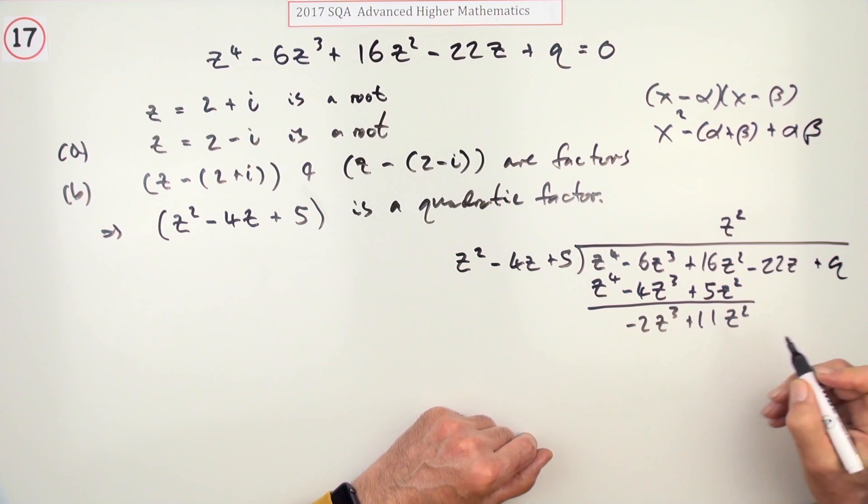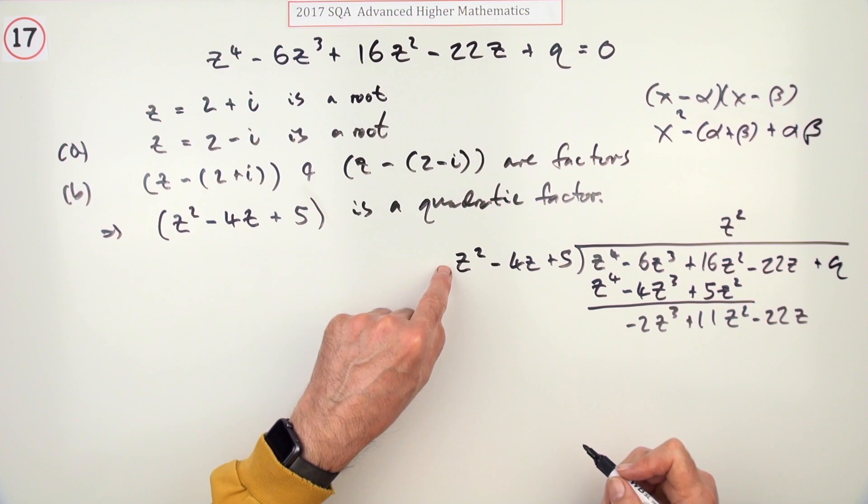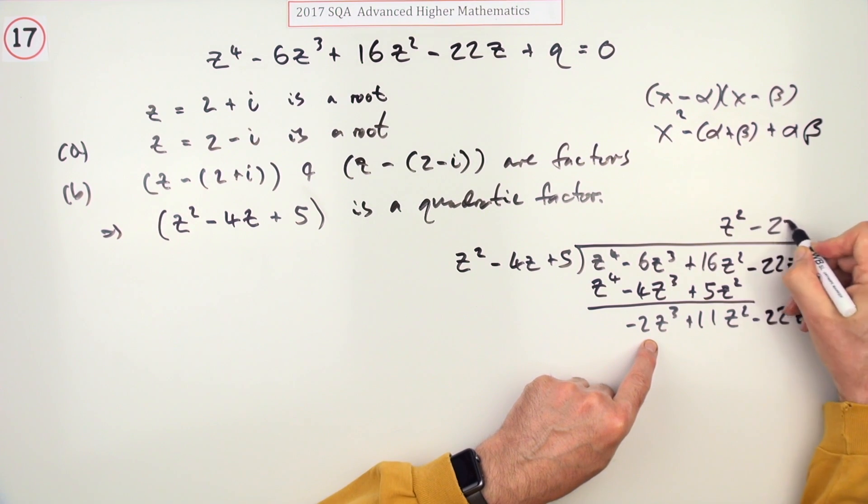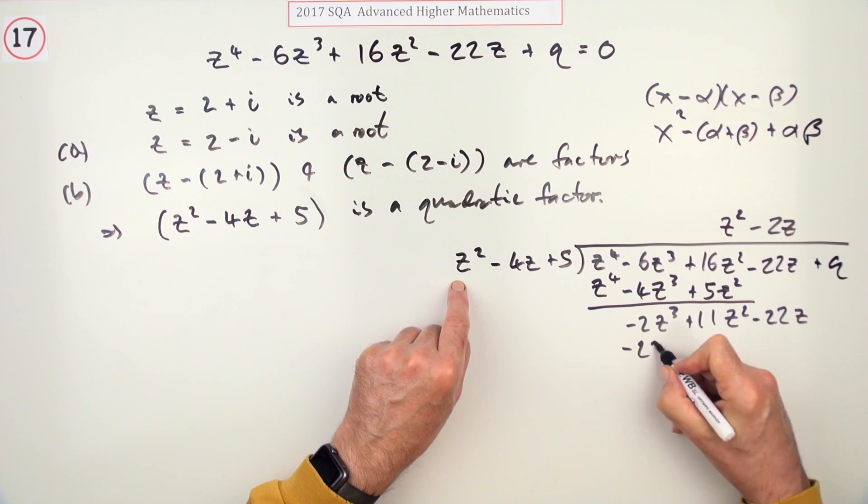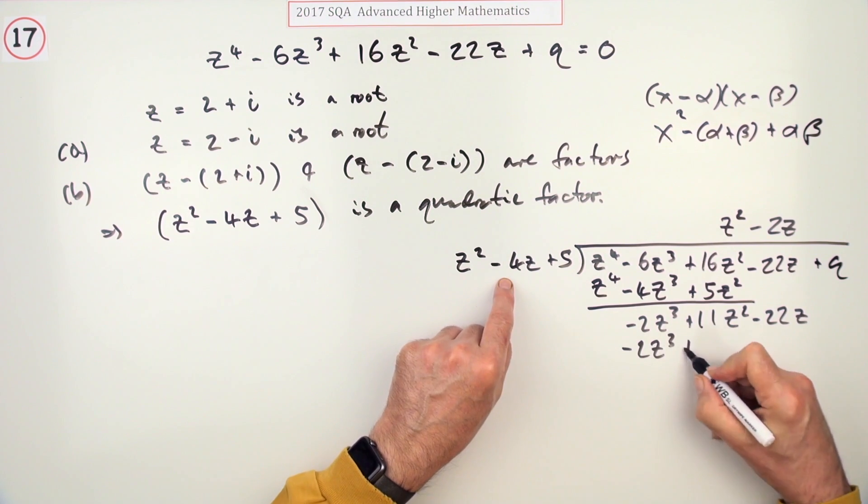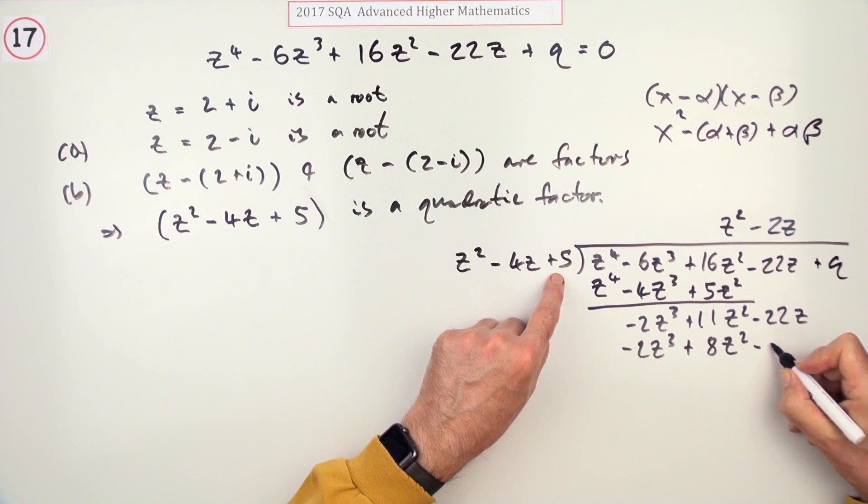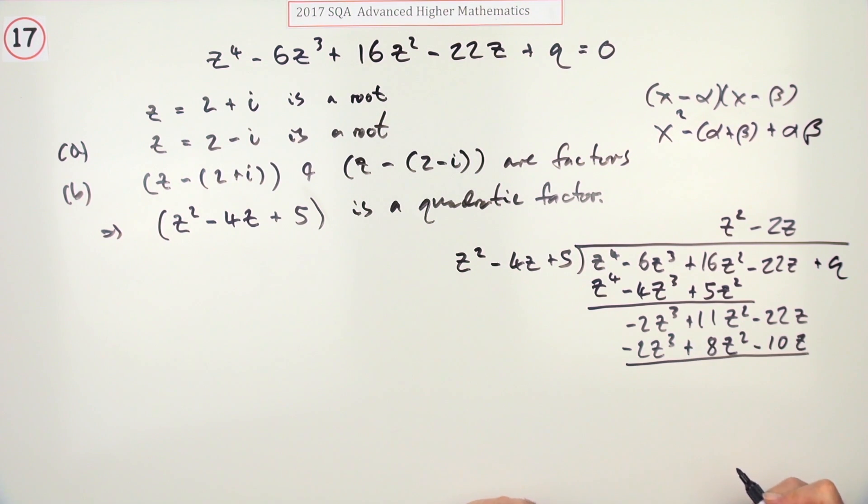Bring down -22z. z² into -2z³ would be -2z. Multiply it out: -2z³ + 8z² - 10z. Subtract to see what's left over: -12z and 3z².